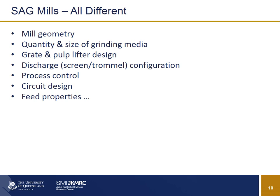A challenge with modeling SAG mills is they're all different. They have a wide range of mill geometries, the amount and size of grinding media can vary significantly, grate and pulp lifter designs are quite varied, and you have different discharge configurations, different ways to control them, varying circuit designs, and feed properties — both size and hardness — that vary significantly. To model all of this, we really need lots of data for model development.